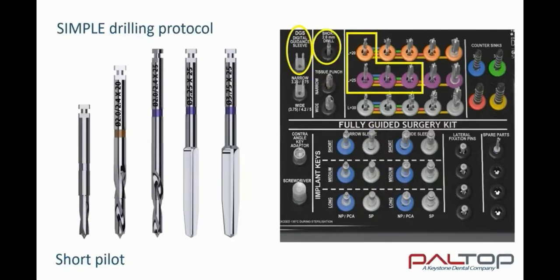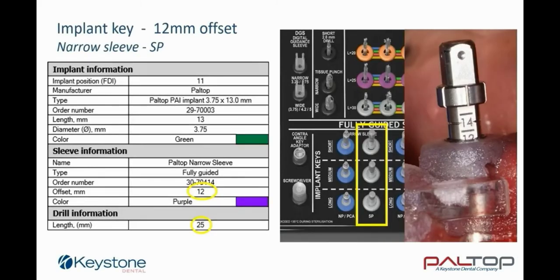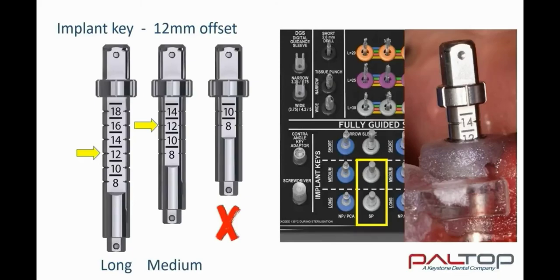Here we see the outline of the drilling protocol for this case. Begin with the short pilot drill, then increase the length to the 20 mm pilot drill, followed by the 25 mm in a stepped approach. This will ensure the DGS will always be engaged in the guide sleeve when the drill is activated. On completion of the final drill depth, increase the diameter of the drill up to 3.25 mm, followed by 3.75 mm. Remember, the drilling protocol may change depending on bone hardness. Now choose from the narrow implant keys for implant placement. The drilling protocol indicates an offset of 12. Note that the implant keys come in three lengths — only the long and medium key have an offset marking of 12.